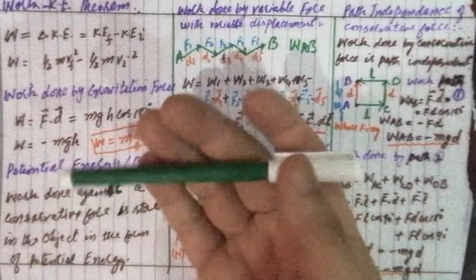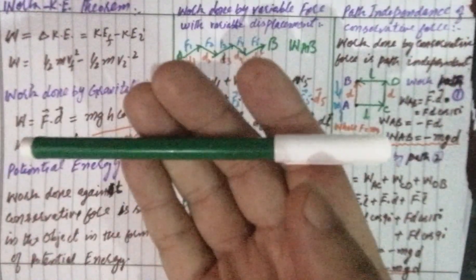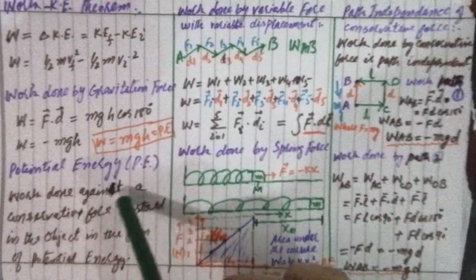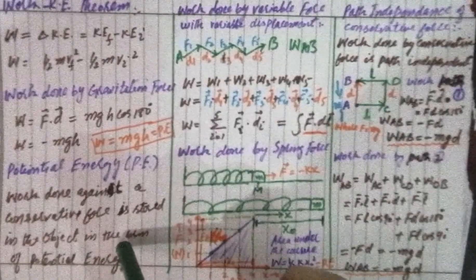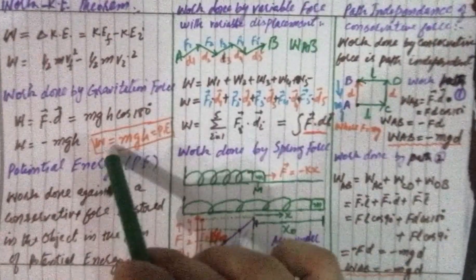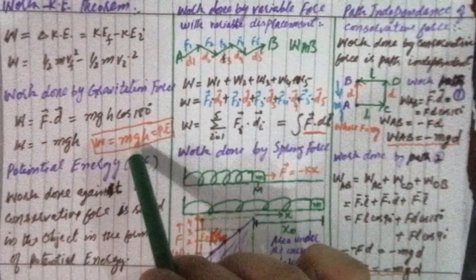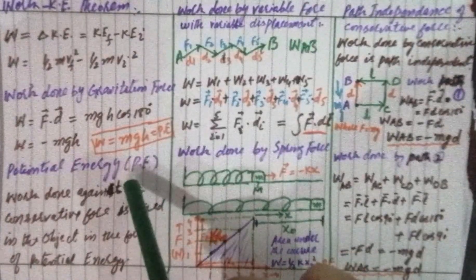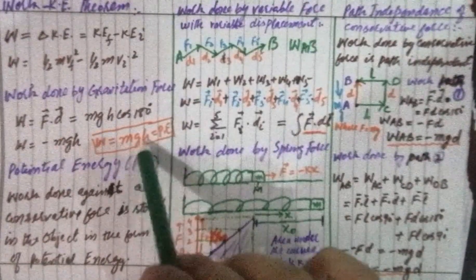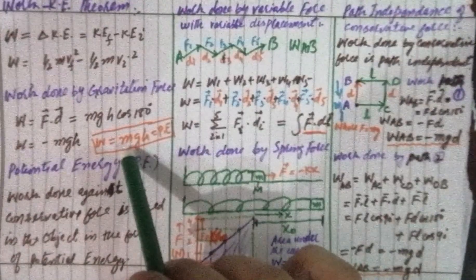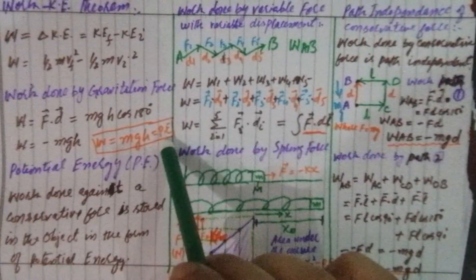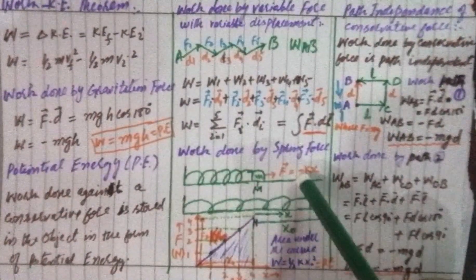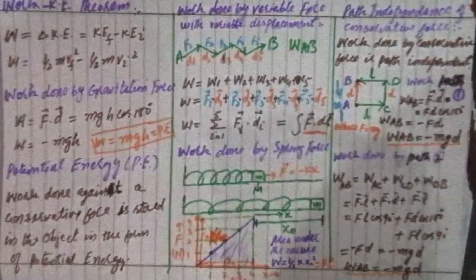When we move an object against the gravitational force, work done against gravity is stored in the object as potential energy. To find how much potential energy is stored, we calculate work done against the gravitational force: force × displacement = mgh gives gravitational PE. Similarly, work done against the elastic force gives spring potential energy ½kx².